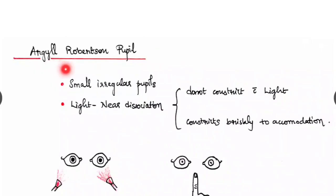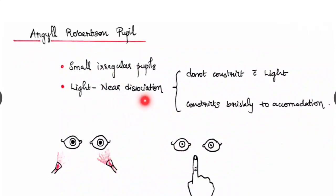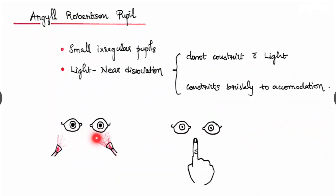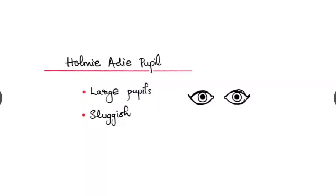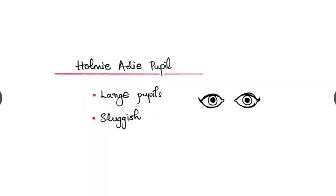The other one is the Argyle Robertson pupil where the pupils will be small and irregular and there will be light near dissociation which means pupils do not constrict with the light but constricts briskly to the accommodation reflex. Next is the Homi-Eddie pupil where the pupils will be large and sluggishly moving.